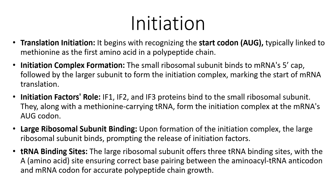The small ribosomal subunit is known as 16S and the larger one is 28S. There are also initiation factors such as IF1, IF2, and IF3 proteins, which bind to the ribosomal subunit. These, along with a methionine-carrying tRNA, form the initiation complex at the mRNA's AUG codon. When the initiation complex is formed, the large ribosomal subunit binds, prompting the release of initiation factors. The large ribosomal subunit offers tRNA binding sites, with the A site (amino acid site) ensuring correct base pairing between amino acid tRNA anticodons and mRNA codons for accurate polypeptide chain growth.